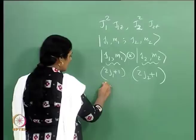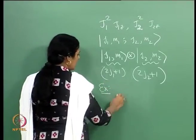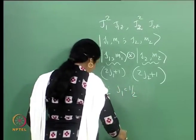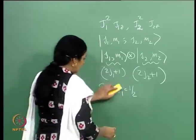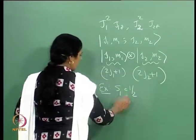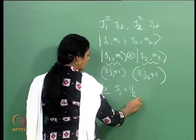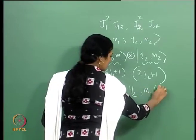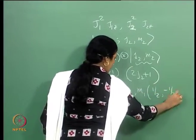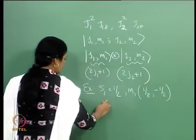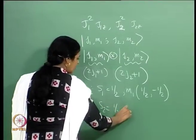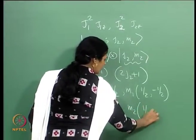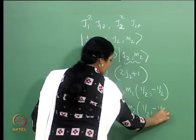Let me give an example. Suppose we are talking about two spin-half particles. S1 is one-half, m1 can take values +½ and -½. Similarly, S2 is one-half and m2 can take values +½ and -½.